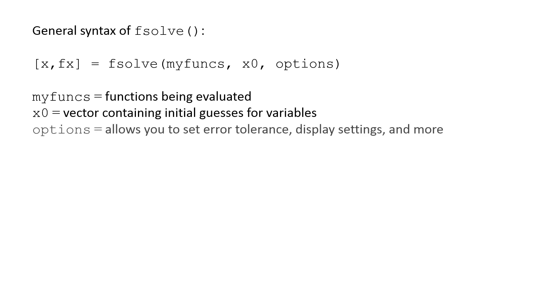The last argument, options, allows you to set error tolerances and display settings. If you do not include this third argument, default settings will be used.